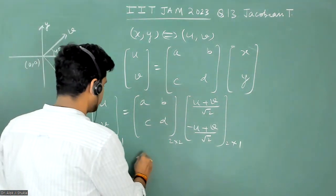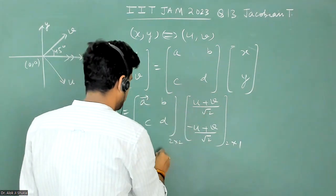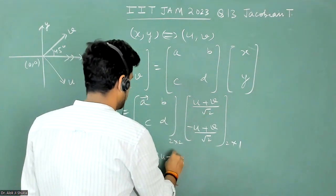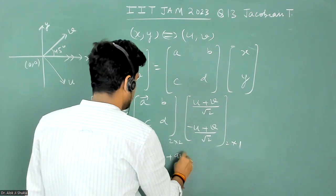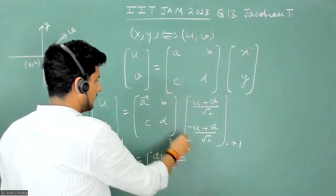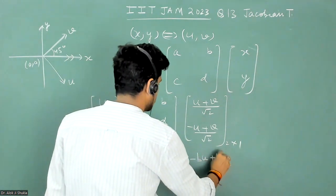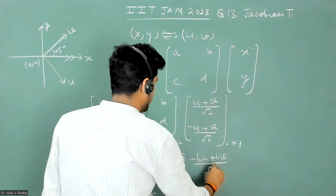So now just multiply them. It will become AU plus AV by under root two, and then minus BU plus BV by under root two.